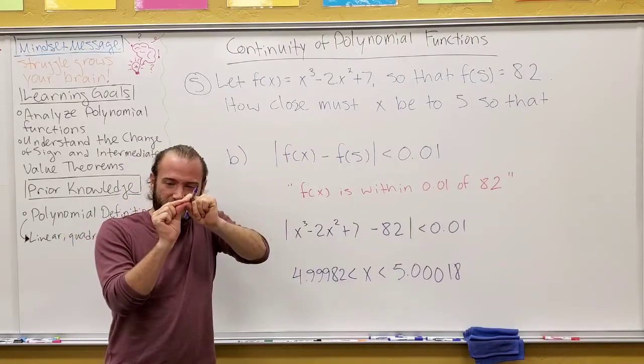So that 0.1 wasn't special. I could ask to be as close as I want to 82. You'll notice this is exactly identical here in Part B, but we're saying f of x, we want it to be within 0.01 of 82.